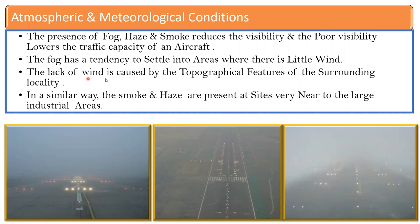The lack of wind is caused by topographical features of the surrounding locality. Similarly, smoke and haze are present at sites very near to large industrial areas. If there is a large industrial area in the nearby zone of an airport, the smoke from that industry can create more fog. Whenever we try to find a location for the airport, we should ensure there are no factories nearby whose smoke would create problems.